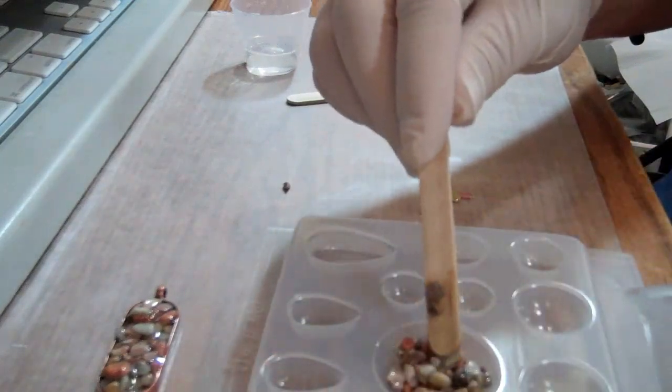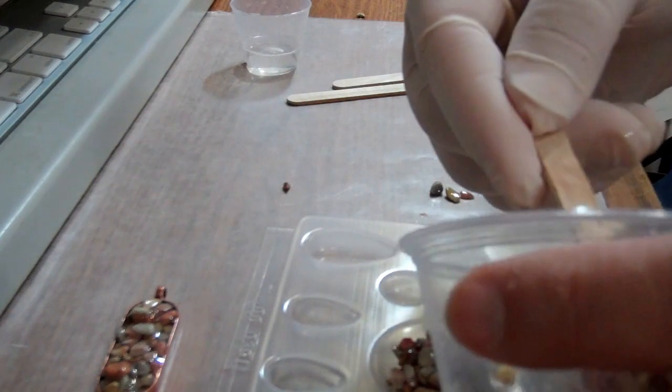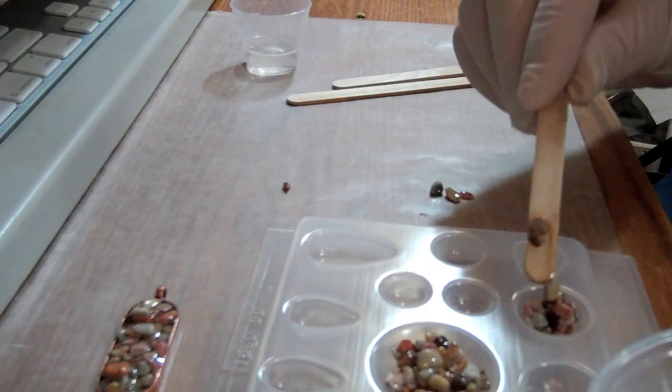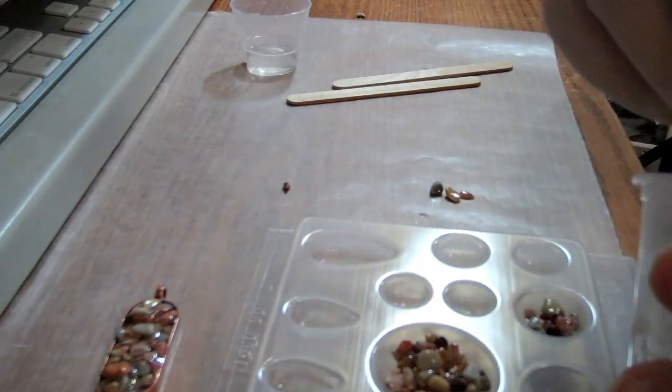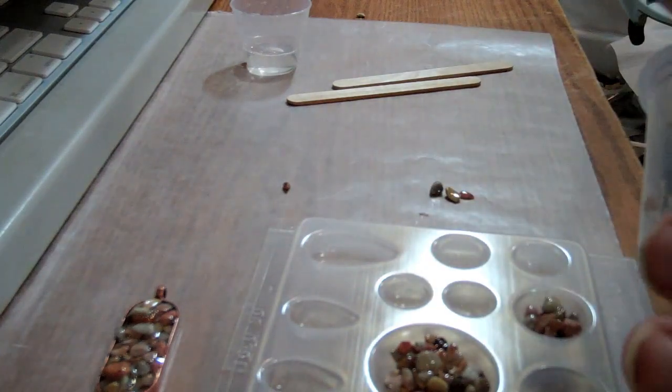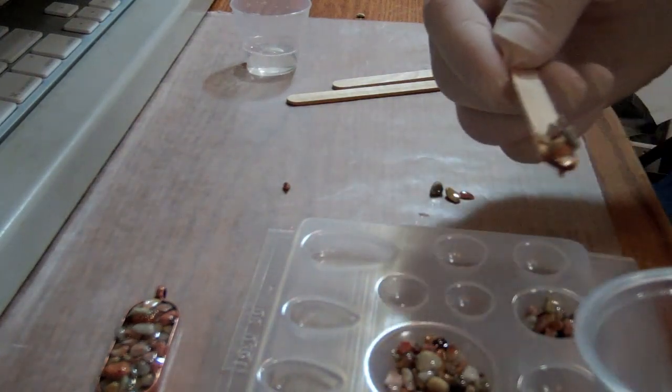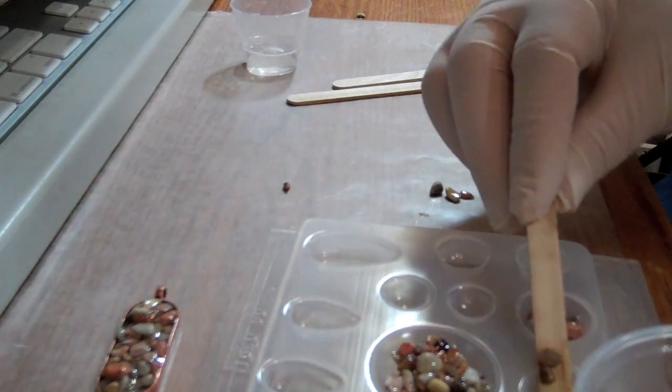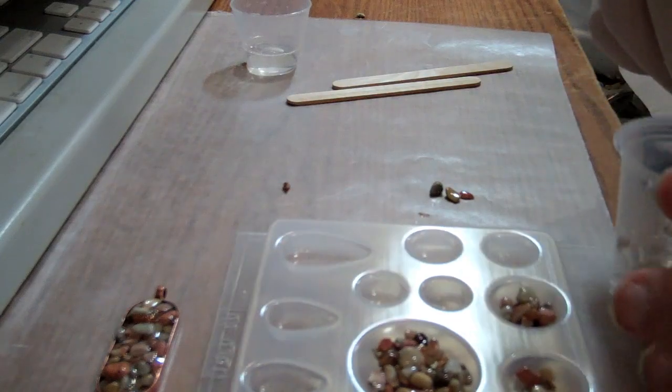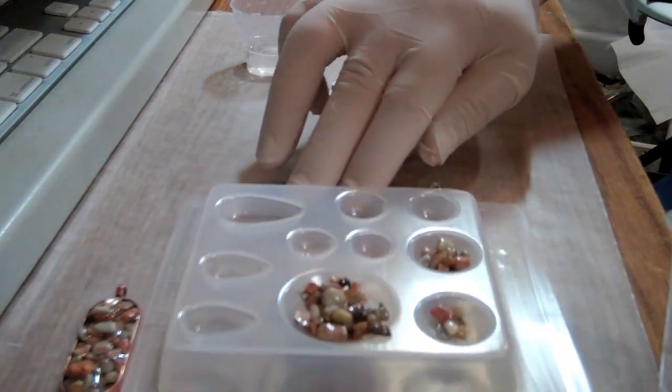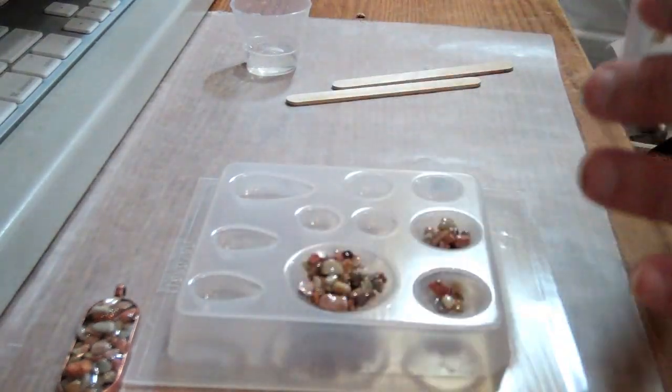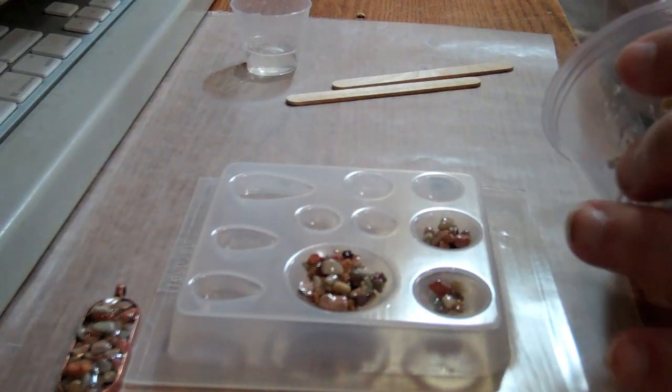Since they already have epoxy on them, might as well use them for something, right? This could be used as a paperweight or something. Or you could actually make these into earrings or buttons or pens or anything you wanted to. These are one of our new molds too, our new cavity molds. This is the Assorted Gems, I believe is what this one is called.